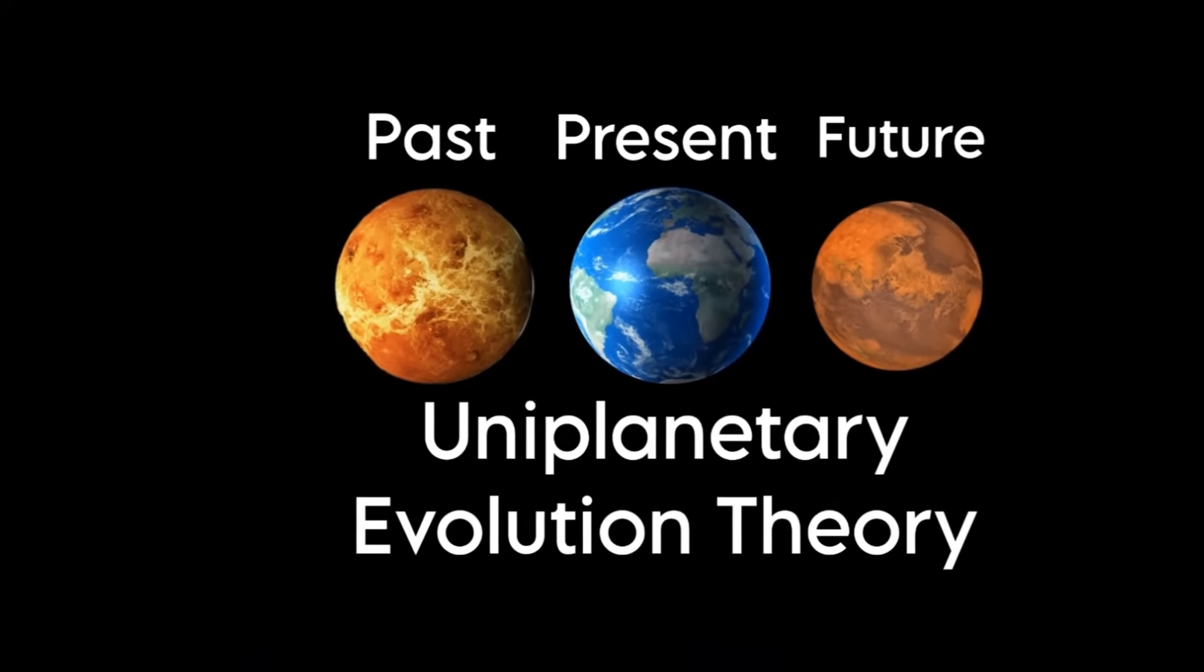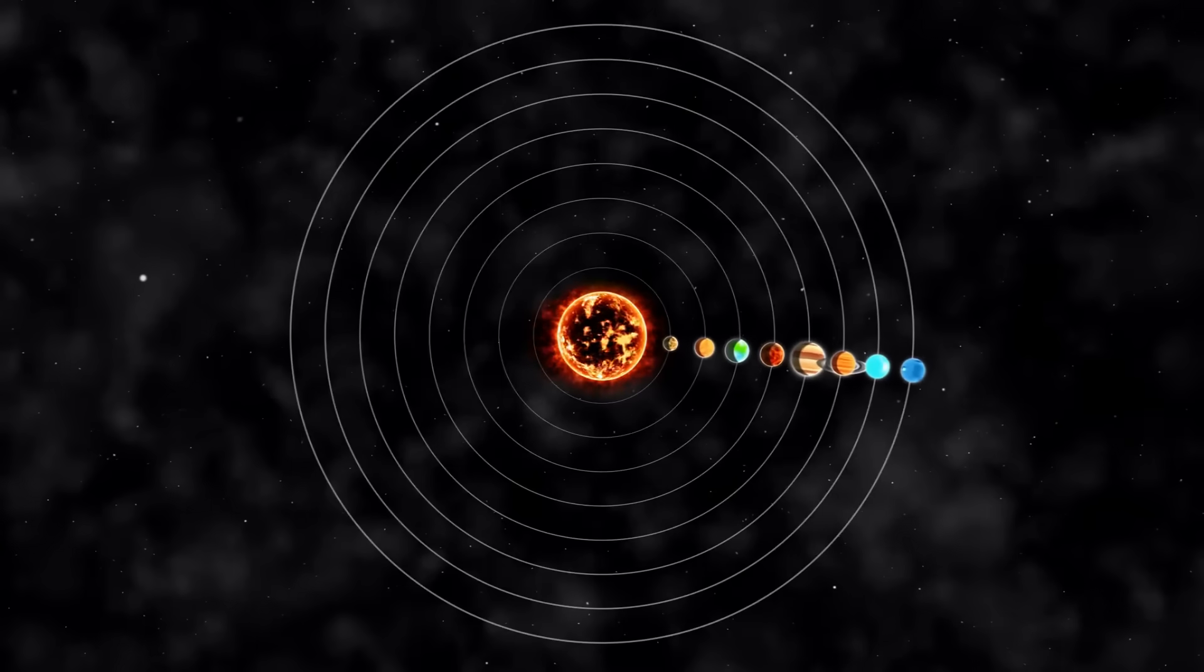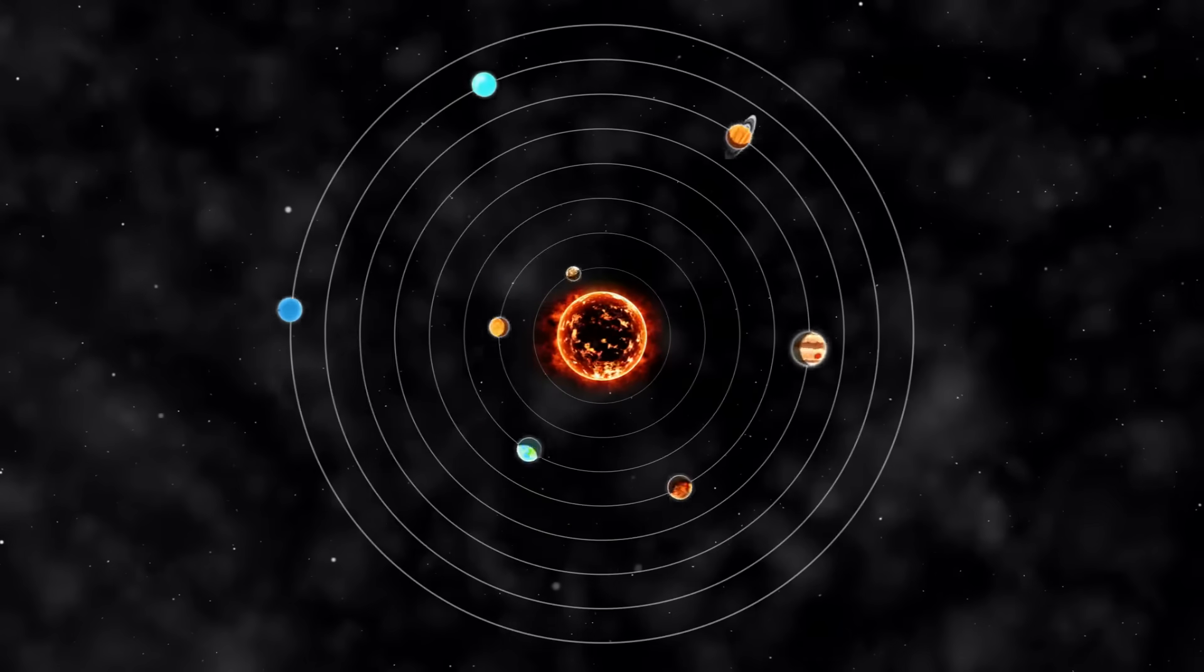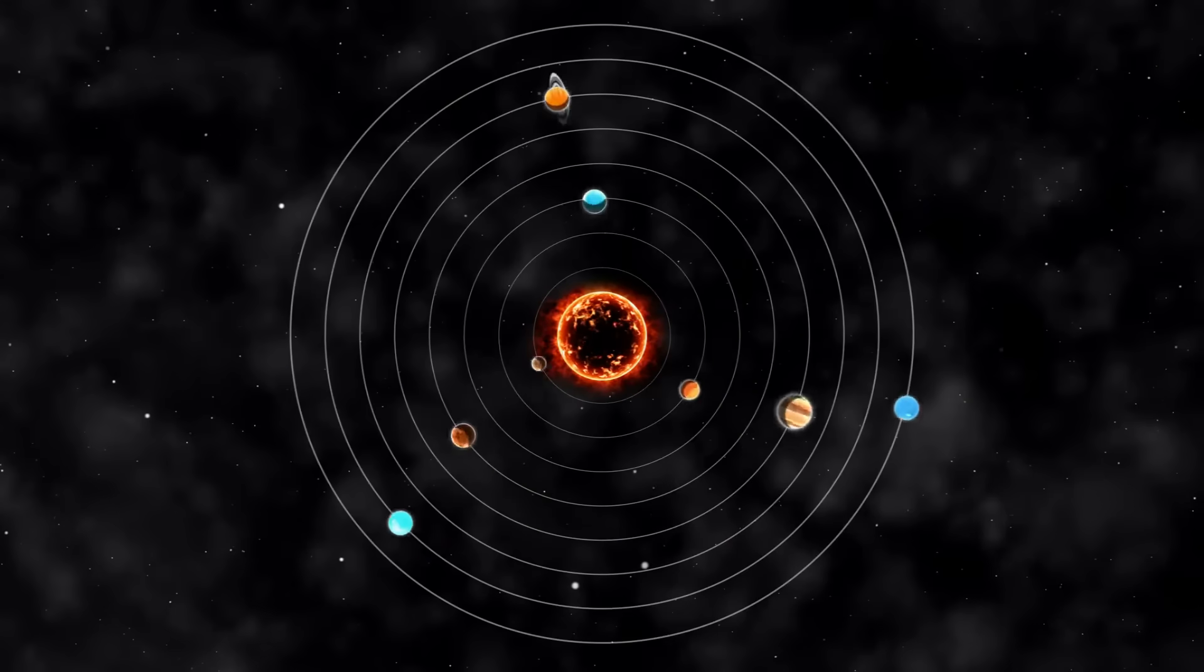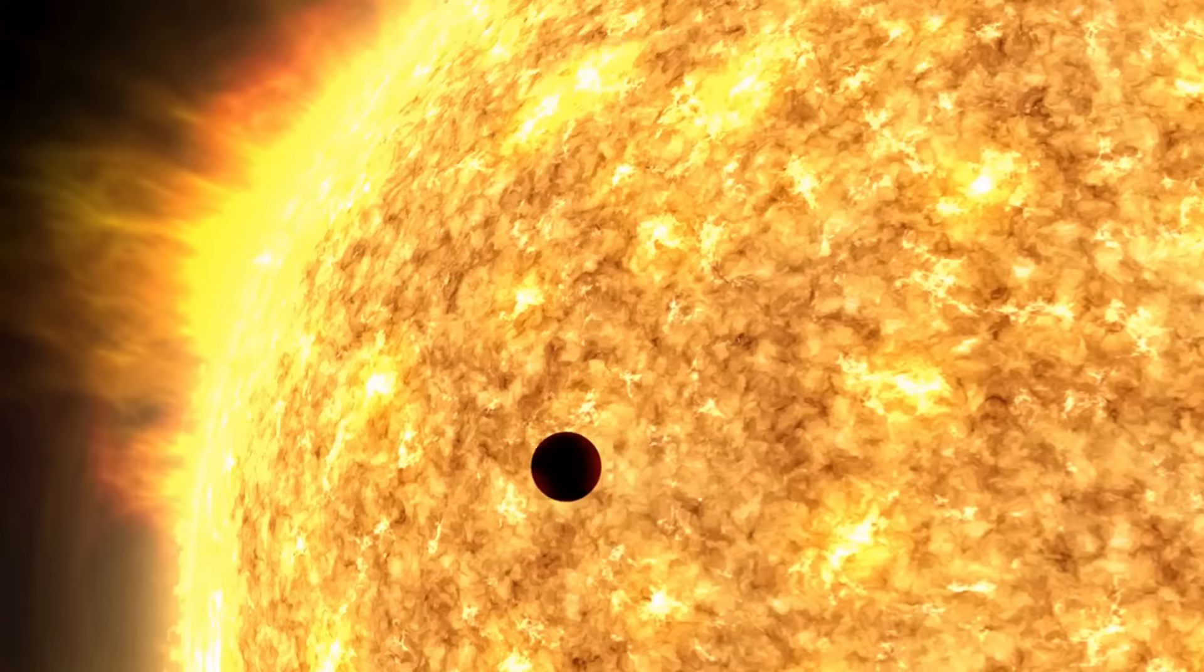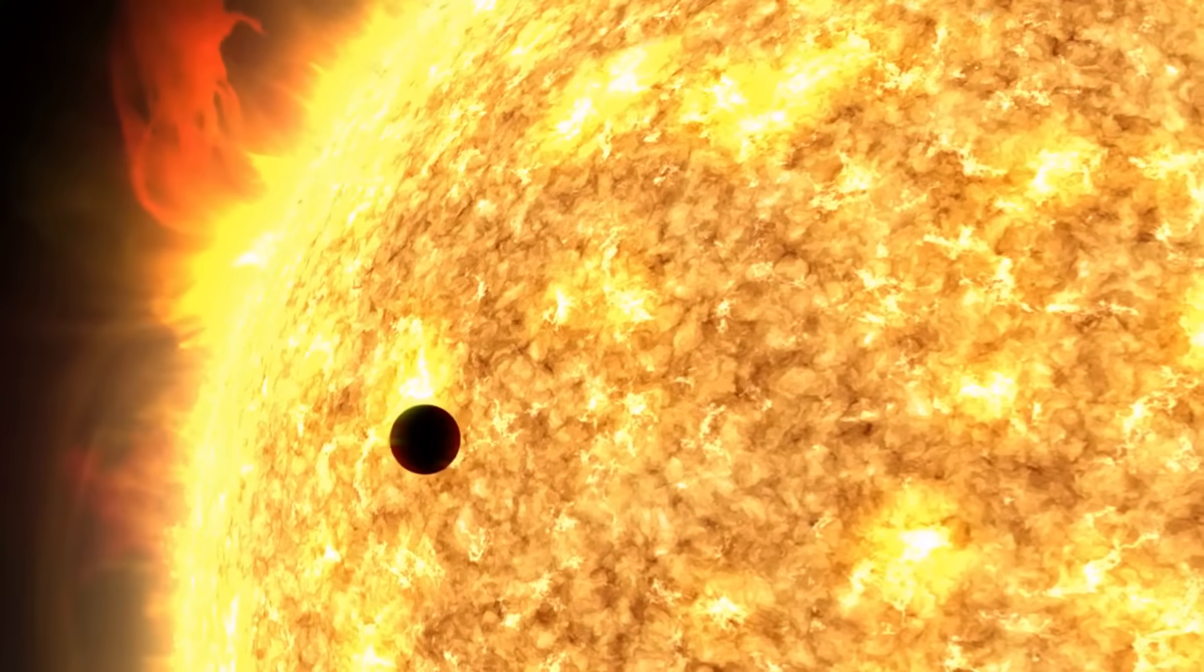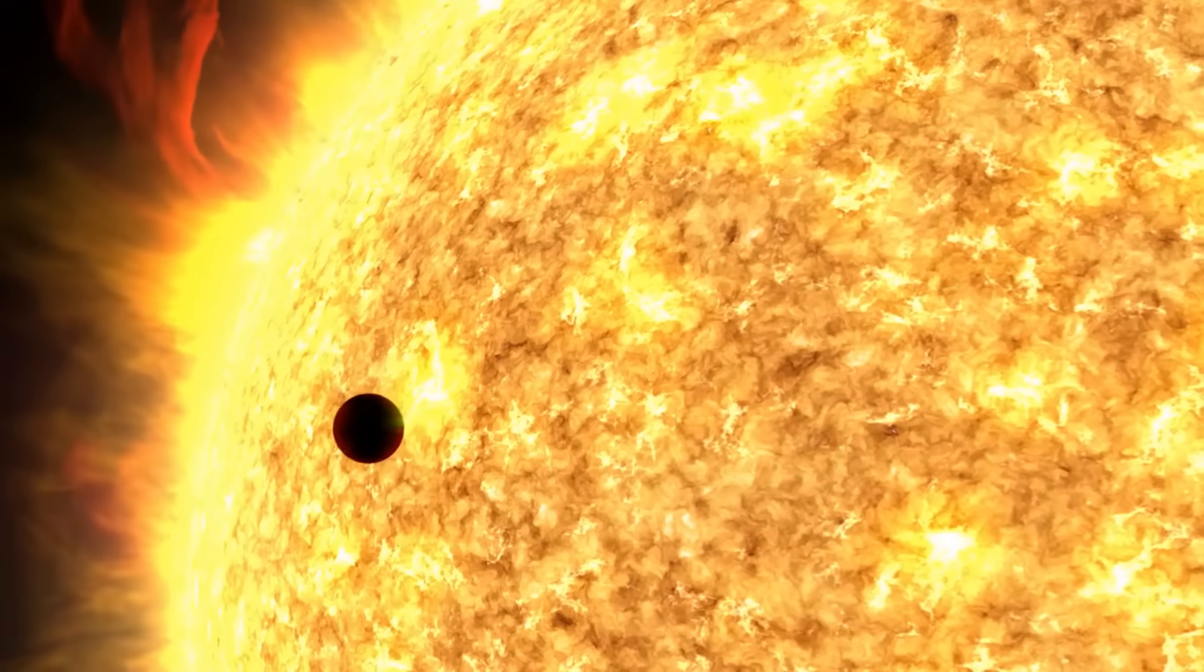The uniplanetary evolution theory presents an enthralling idea. Every planet in our solar system is actually Earth at different stages of its evolution. Imagine every billion years our Sun ejects a plasma ball of iron and nickel, which then forms the core of a new planet.